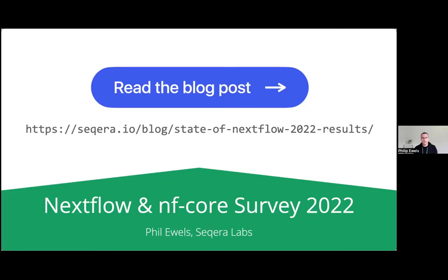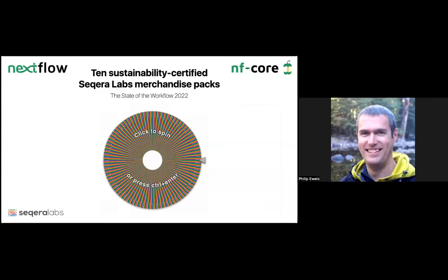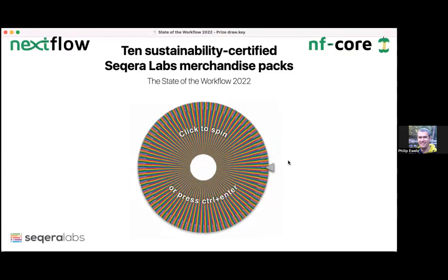There was definitely an ulterior motive for some of you to fill in this survey. As part of the survey we had around 10 prizes — Nextflow and Seqera Labs merchandise packs. We took all the names and placed them into a big circular prize draw, and from there drew 10 people. We did this earlier this morning, mostly because it takes some time, but if you want to watch it you can go through the whole thing.